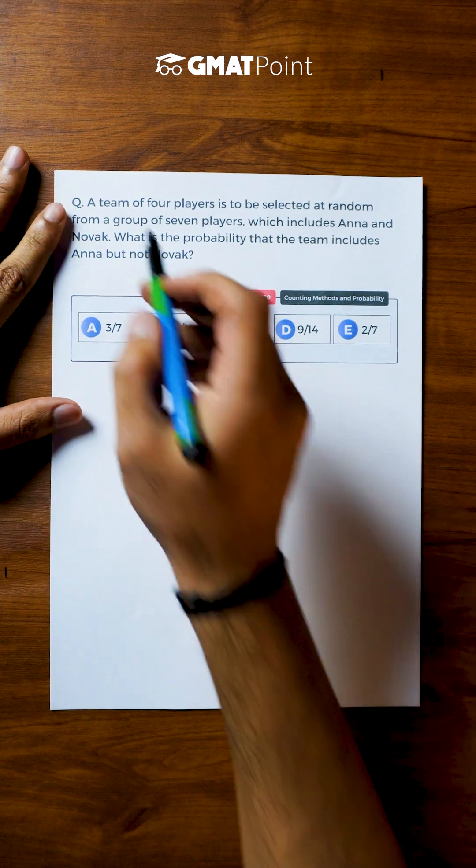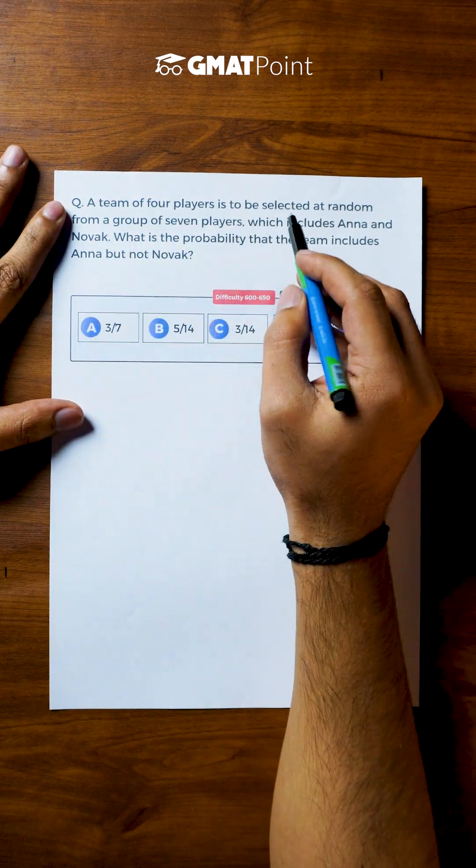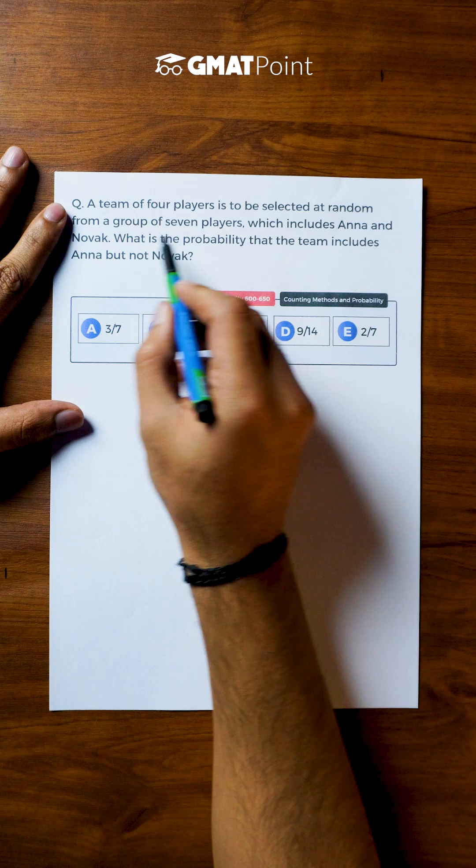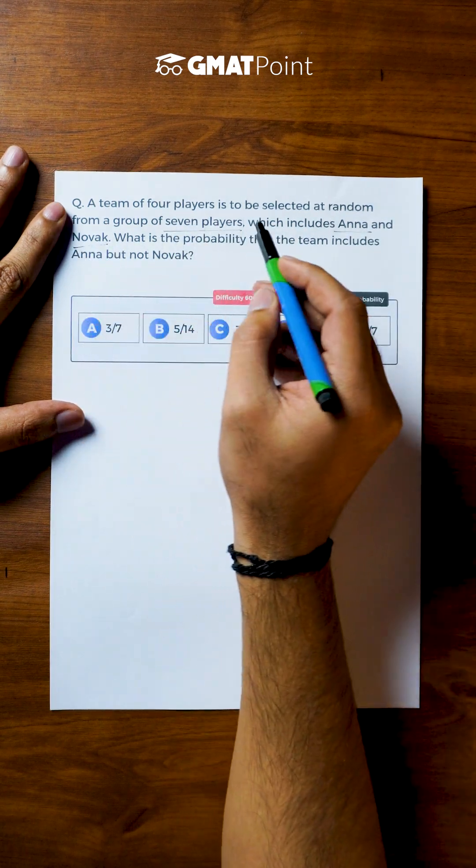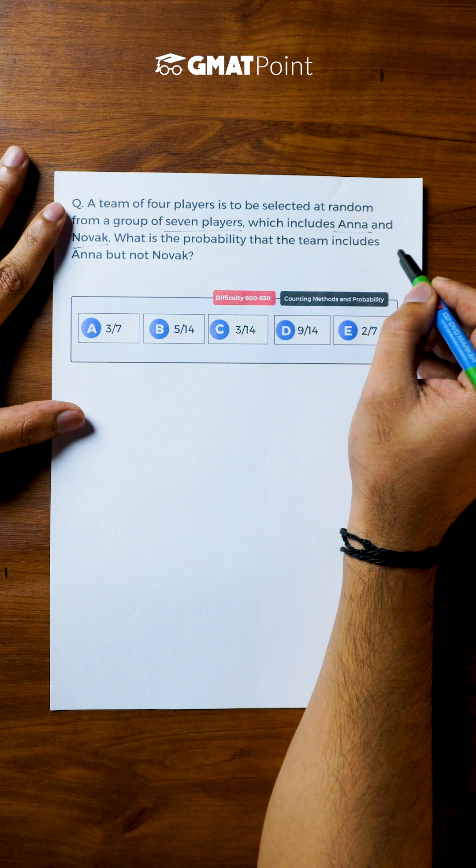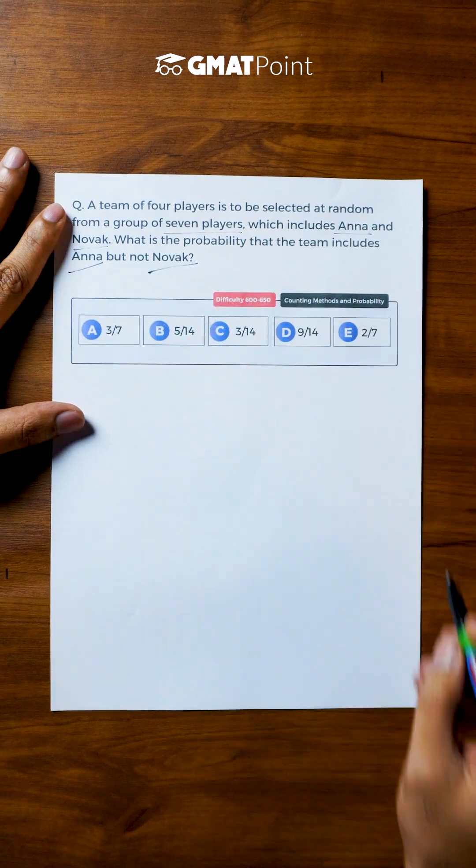Let us see how to solve this question. A team of 4 players is to be selected at random from a group of 7 players which includes Anna and Novak. What is the probability that the team includes Anna but not Novak?